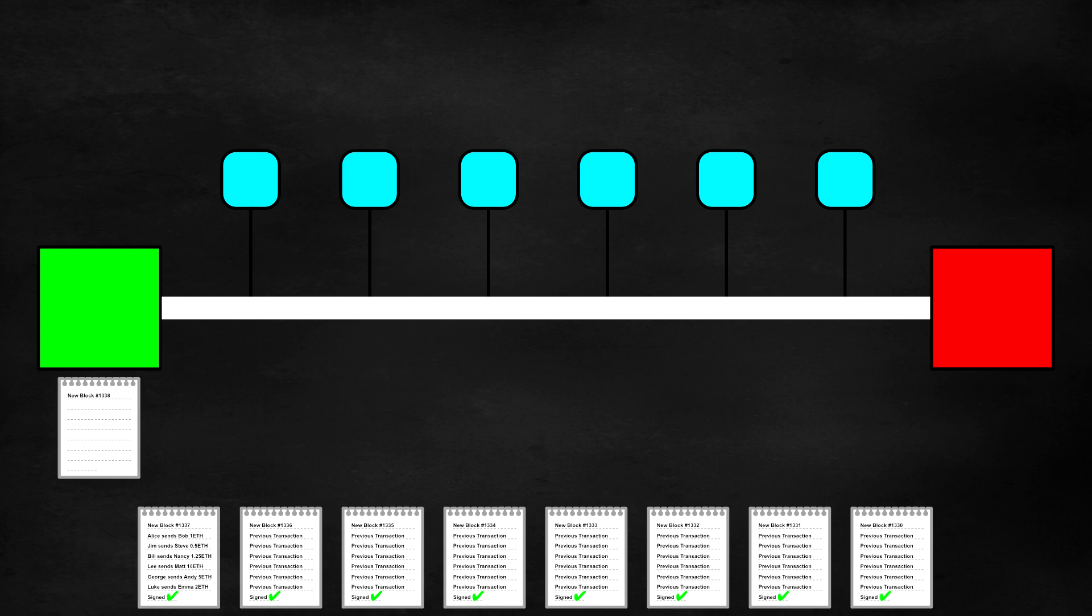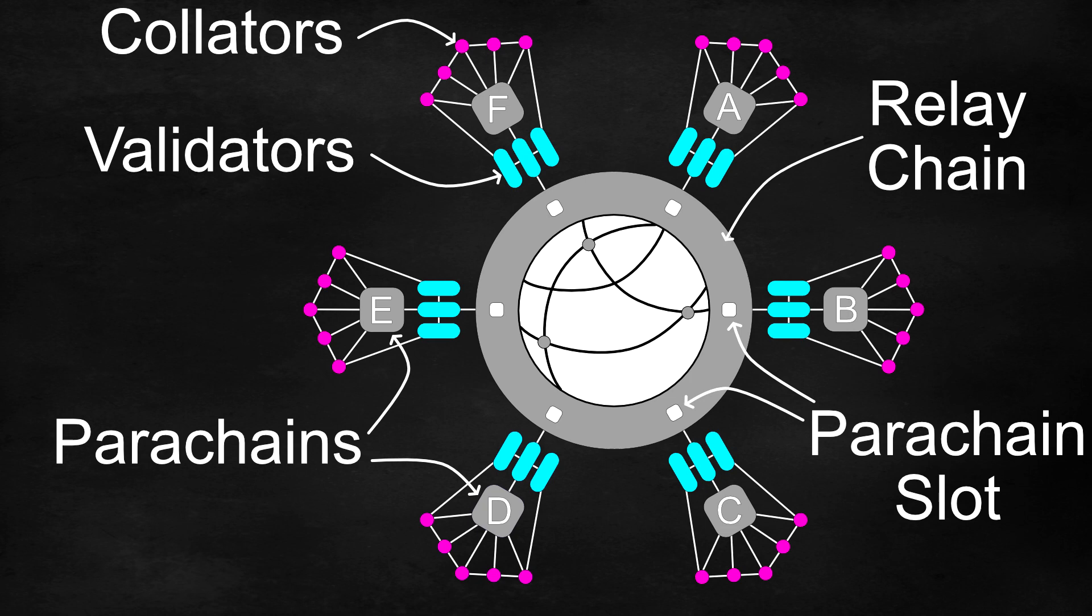Then this process repeats itself. So you may be asking how does this tie in to the complicated diagram of the Polkadot or Kusama networks that we saw before?